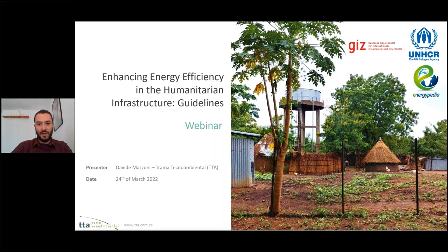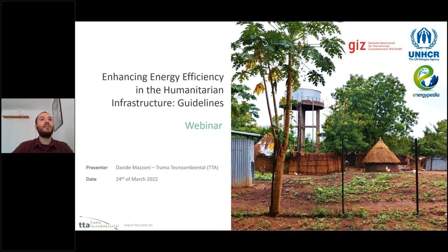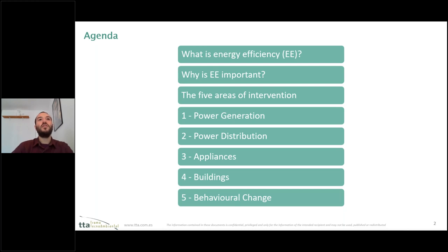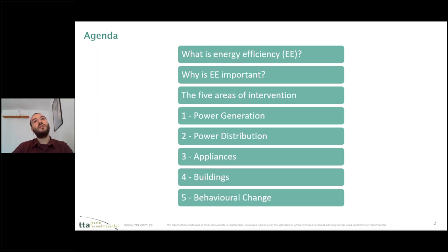Thank you to Energypedia, UNHCR, and GIZ for co-organizing this webinar. In this presentation, we will summarize the energy efficiency implementation guidelines developed for GIZ, soon to be published. We will cover what energy efficiency means in practical terms for humanitarian infrastructure, why it is so important in this context, and the five areas of intervention: power generation, power distribution network, appliances, buildings, and behavioural change.